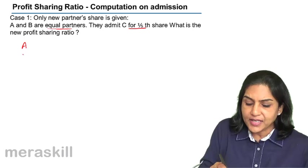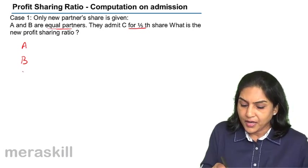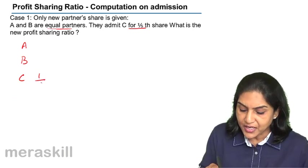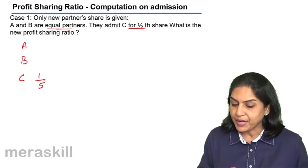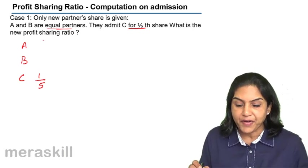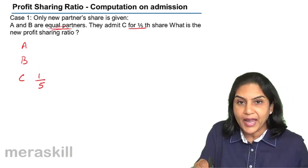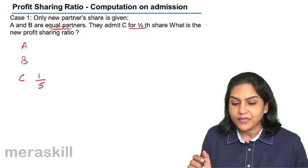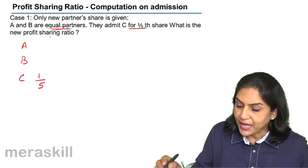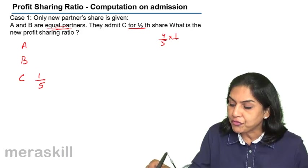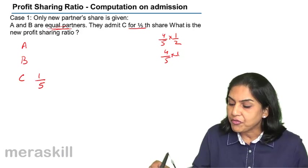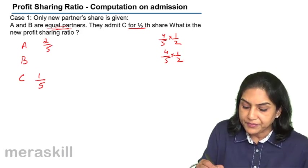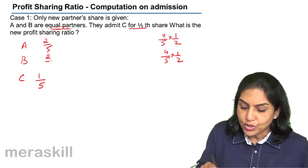C is admitted for one-fifth share. So what is the balance remaining? The balance remaining is 4 by 5, and 4 by 5 would be given to A and B in the same ratio that they had between themselves before C joined. They were equal partners, so A will get half of four-fifths and B will also get half of four-fifths. So A's share now becomes 2 by 5 and B's is also 2 by 5.